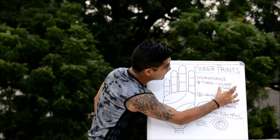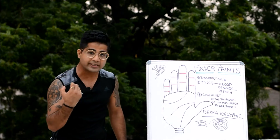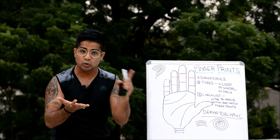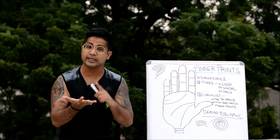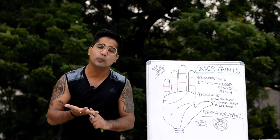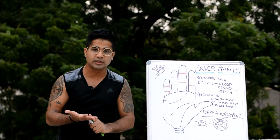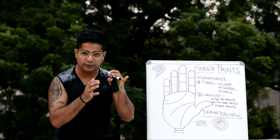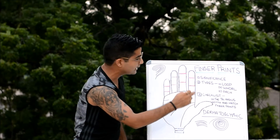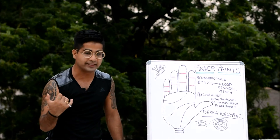When we discuss each type individually, there are further subcategories. For the loop, you will find it in an ulnar loop formation, a radial loop formation, or a composite loop formation. All of that we will discuss in detail when we take up each print pattern individually.